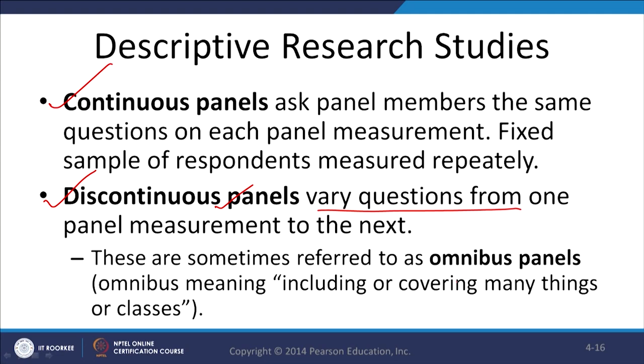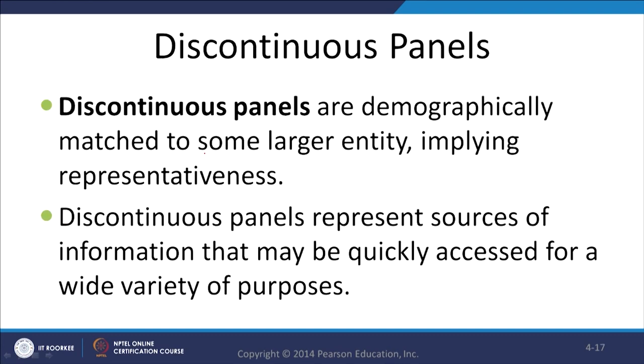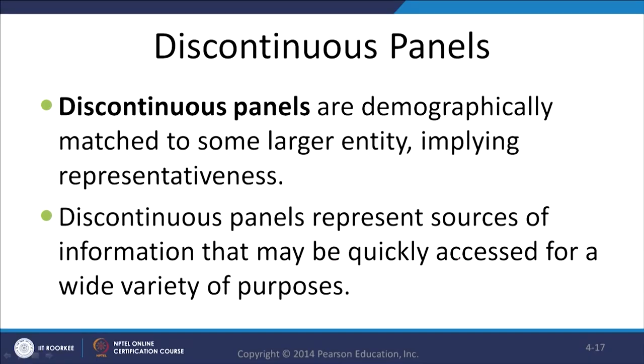In a discontinuous panel, the panel members may be the same but the questions are varying. Discontinuous panels are demographically matched to some larger entity, implying representativeness — the panel members share similar demographic characteristics to the population. They represent sources of information that can be quickly accessed for a wide variety of questions, which is where discontinuous panels come into play.